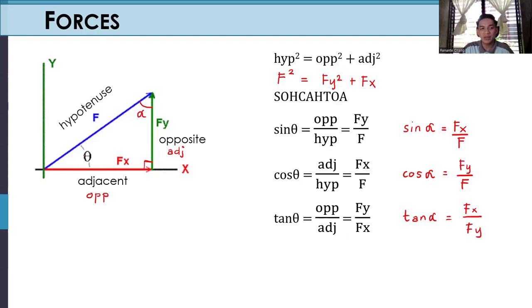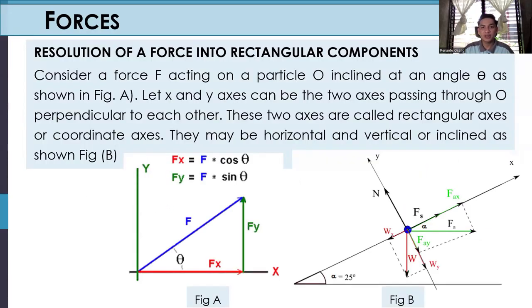Therefore, if you are given different angles, remember these formulas. Resolution of a force into two rectangular components: consider a force F acting on a particle O, inclined at angle theta. Let the X and Y axes pass through O perpendicular to each other — these are called rectangular or coordinate axes. They may be horizontal and vertical, or inclined. For today's topic we will focus on horizontal and vertical forces; inclined will be in the next video.